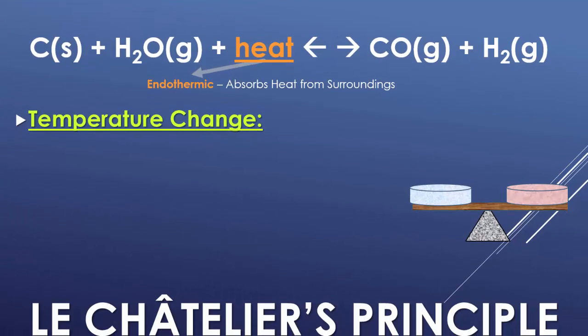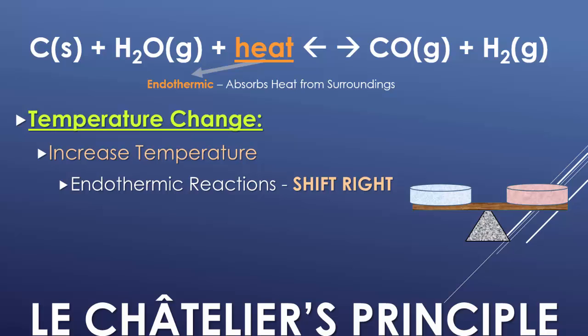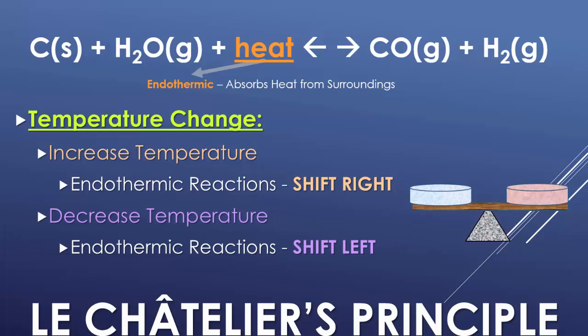Temperature changes also affect equilibrium shifts. In an endothermic reaction, if there's an increase in temperature, there's going to be a shift to the right. Think of temperature as a unit just like concentration — increasing temperature means applying more heat to the left-hand side, almost like adding a reactant itself. Decreasing temperature is like decreasing one of those reactants, so there's a shift to the left.